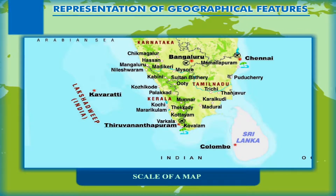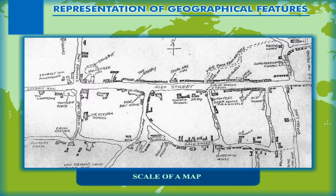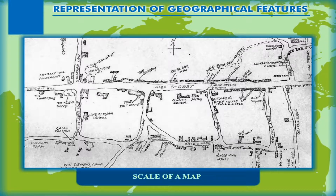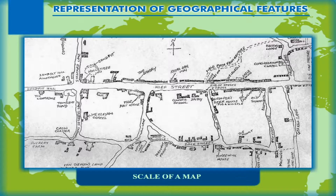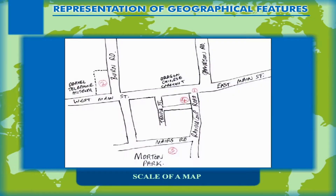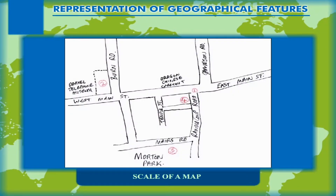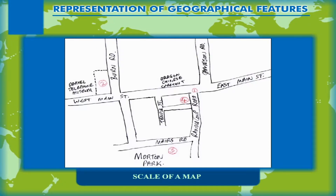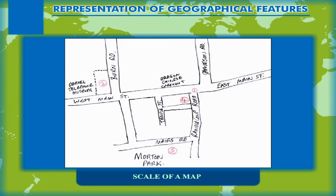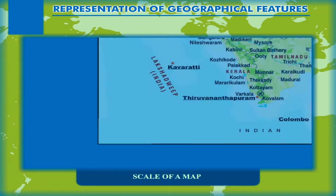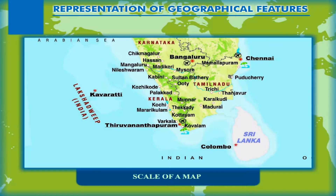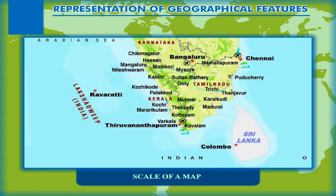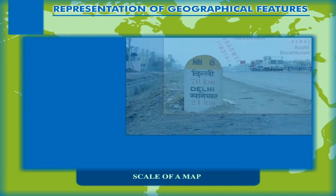Any drawing, however accurate it may be, if drawn without a scale is called a sketch. For example, when you draw to guide your friends to reach your house, this drawing is called a sketch. Scale is defined as the ratio of the distance on the map and the corresponding distance on the ground.